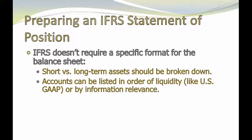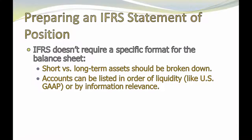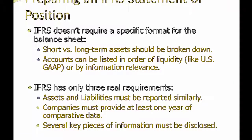There really are only three requirements; the rest is up to a specific company. Requirement number one: assets and liabilities have to be reported similarly. So if I list assets by liquidity, I have to list liabilities by liquidity. If I list assets by relevance, then liabilities have to be by relevance. I can't do one by liquidity and one by relevance — they have to match.